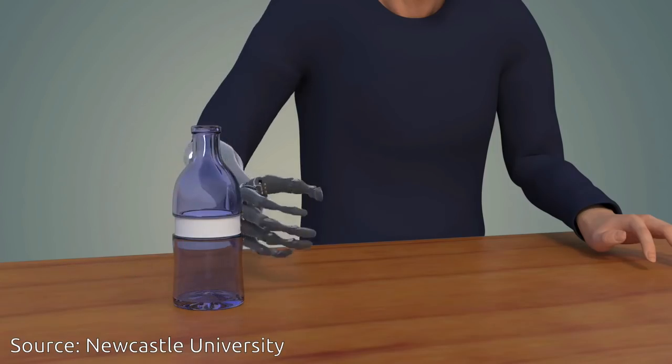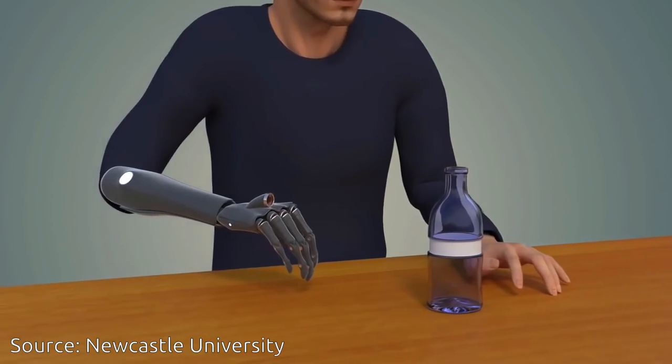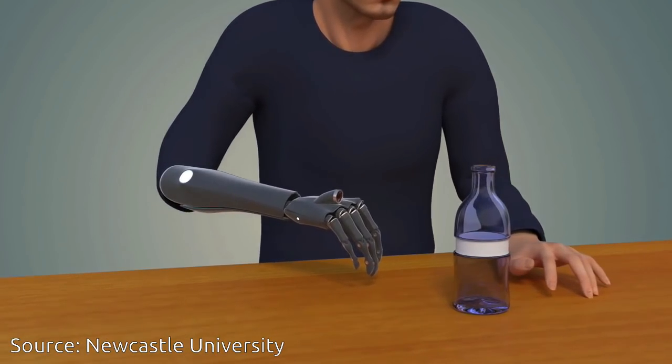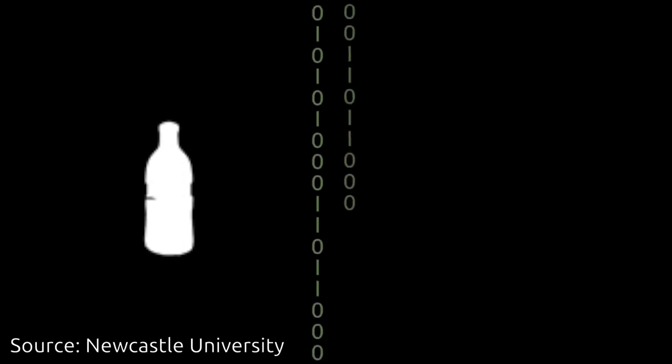Bypassing the usual processes which require the user to see the object, physically stimulate the muscles in the arm, and trigger a movement in the prosthetic limb, the hand sees and reacts in one fluid moment.